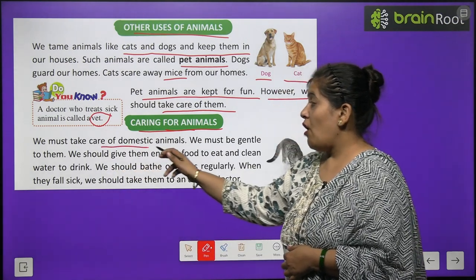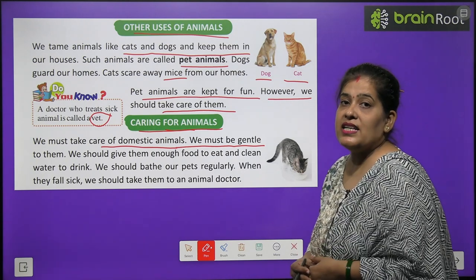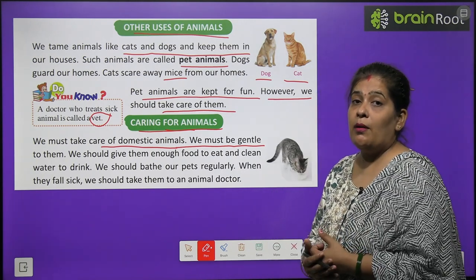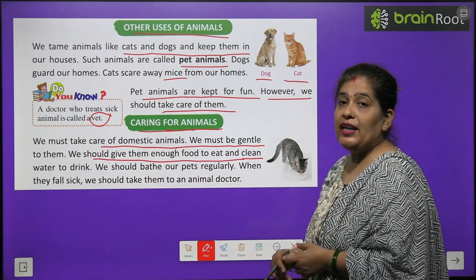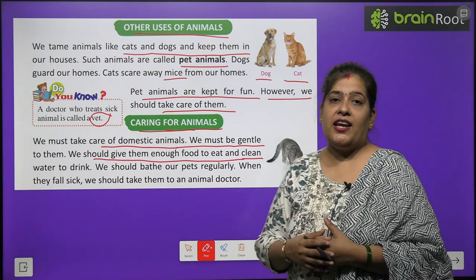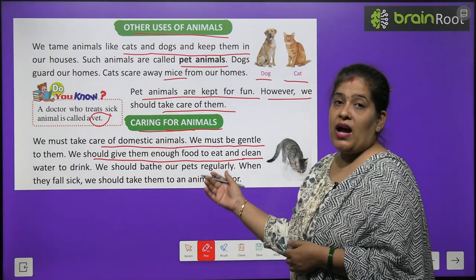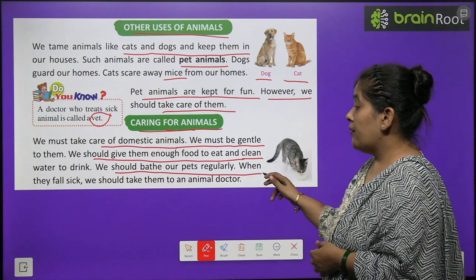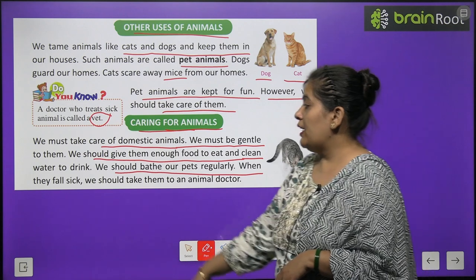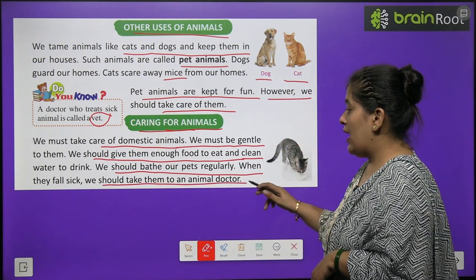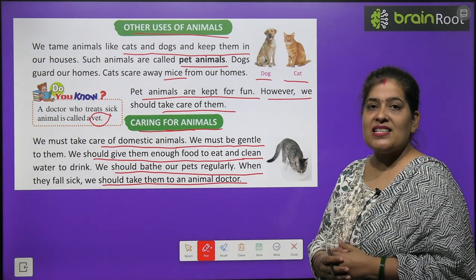We must take care of domestic animals. We must be gentle to them. Hume apne domestic animals ki dekh bhal karni chahiye. Unke prati hum dayalu hon. We should give them enough food to eat and clean water to drink. Unhe jitna bhojan chahiye khane ke liye, hume utna unhe dena chahiye, aur saaf pani peene ke liye. We should bathe our pets regularly. Hume apne janvaro ko roz nehlana chahiye. When they fall sick, we should take them to an animal doctor.